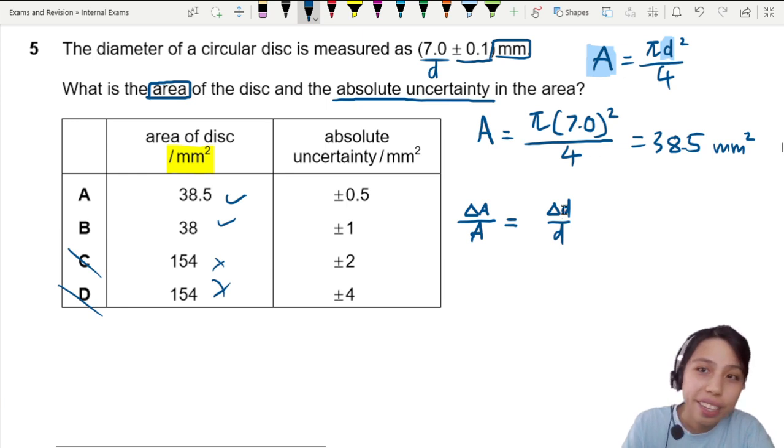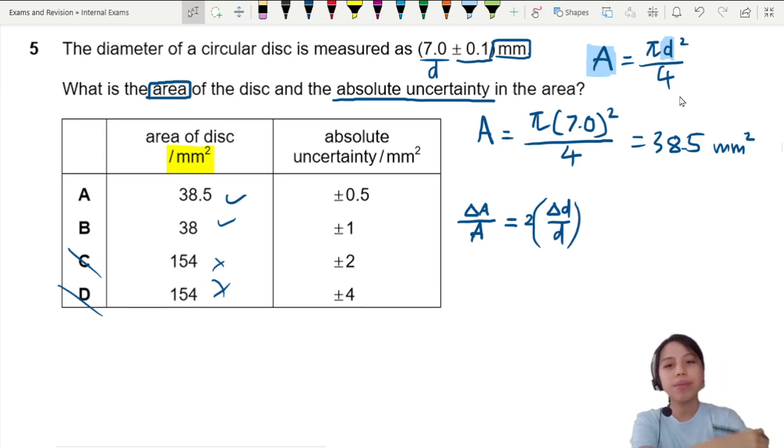But don't forget the square. The square means times two. So we need to times two. That is the first setup of the equation.